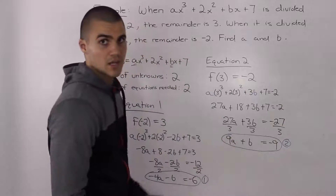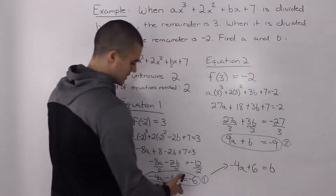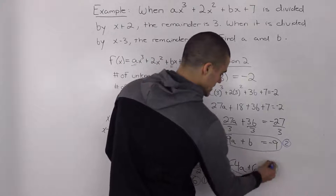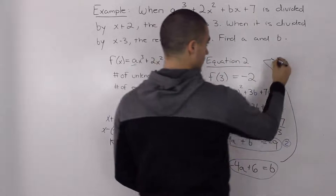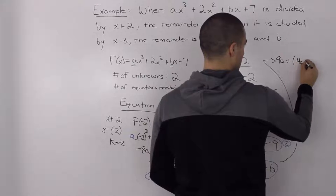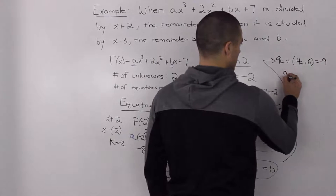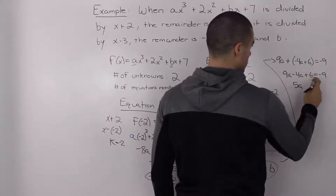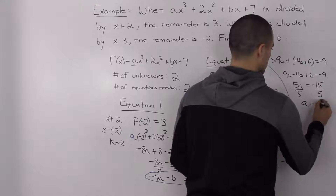Now we've got two equations and two unknowns, and we can use substitution or elimination to solve for a and b. I'm going to take equation 1 and isolate for b. Bringing the negative b over and the negative 6 over, we end up with b equals negative 4a plus 6. Then I'll take this b and plug it into equation 2. So we get 9a plus negative 4a plus 6 equals negative 9. Simplifying: 5a plus 6 equals negative 9. So 5a equals negative 15, and dividing by 5, a equals negative 3.